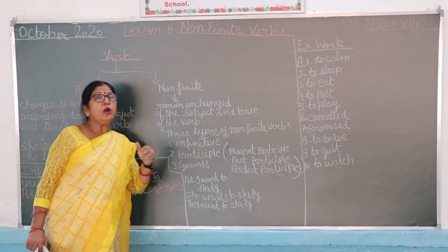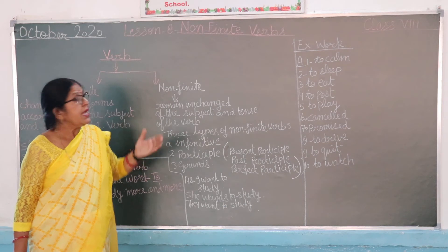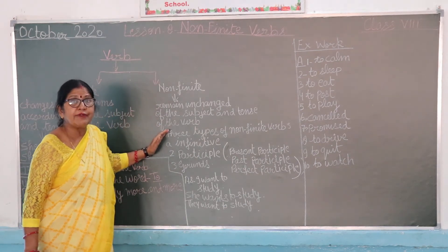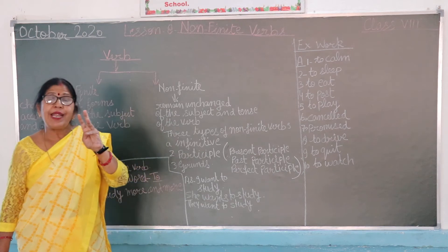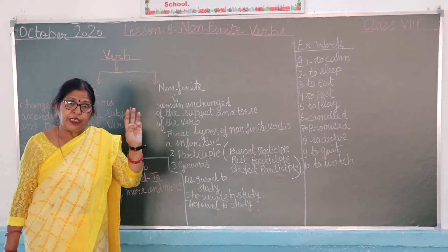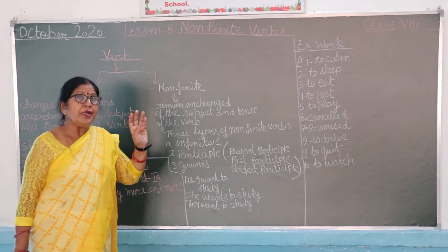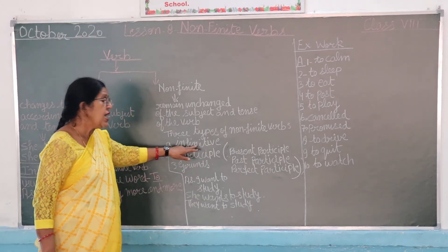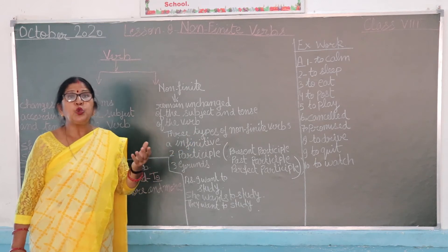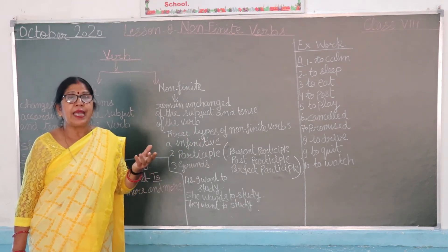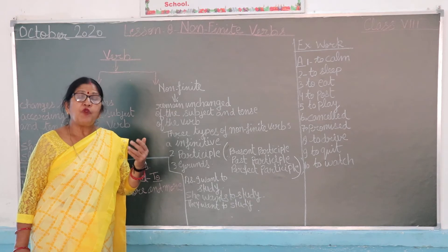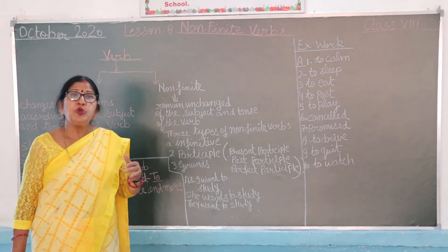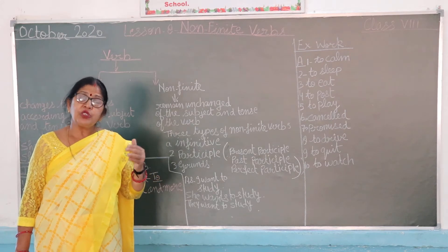Now, how many types of non-finite verbs are there? There are three types of non-finite verbs. The first is the Infinitive. For example: I want to study, I want to go to market, I want to teach you, I want to sing his song.